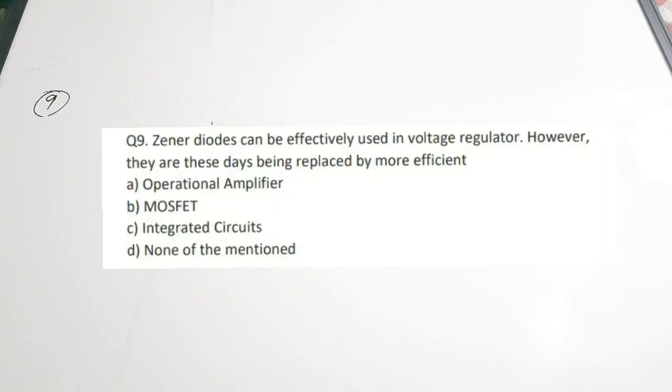Question 9: Zener diodes can be effectively used in voltage regulators. However, these days they are being replaced by more efficient ___. A. Operational amplifier, B. MOSFET, C. integrated circuits, D. none of the mentioned. We cannot generally use operational amplifiers for voltage regulation. The correct answer is option C — nowadays we use ICs or integrated circuits for voltage regulating purposes rather than Zener diodes.